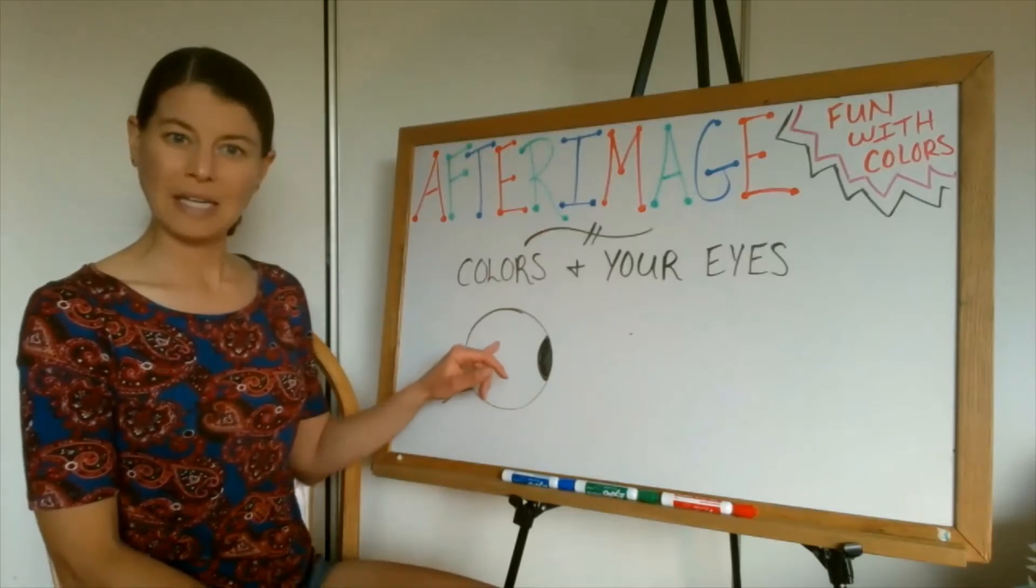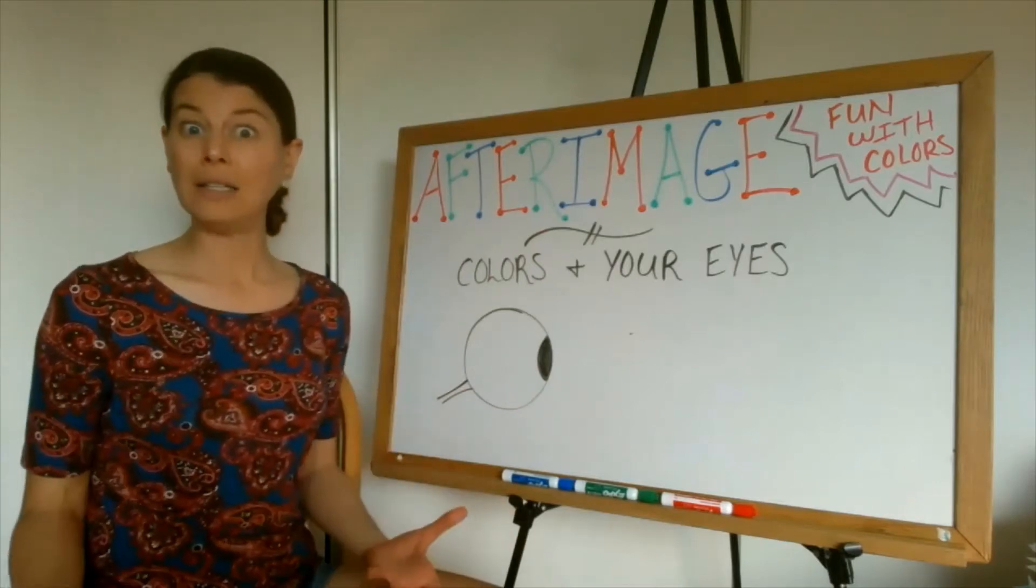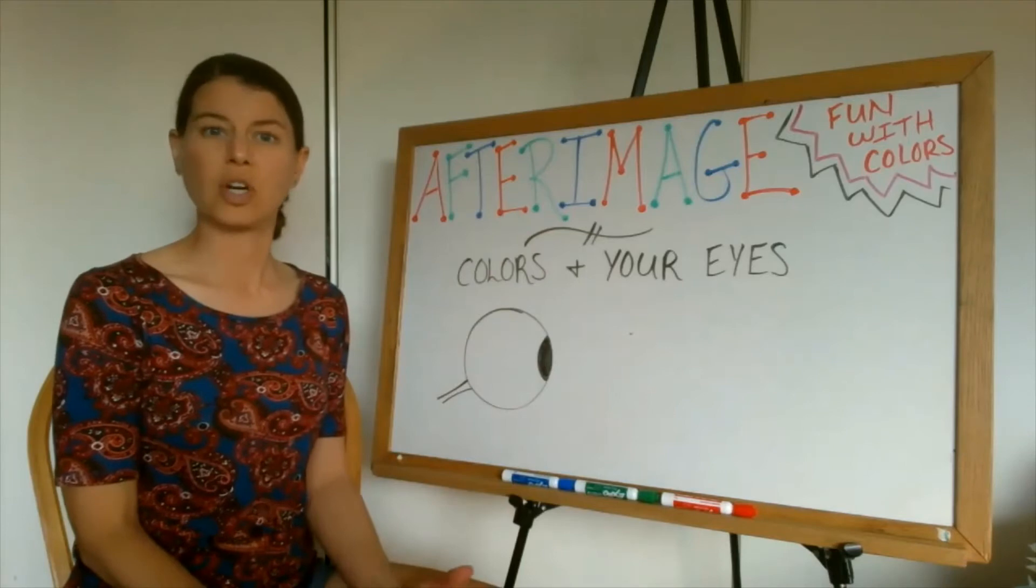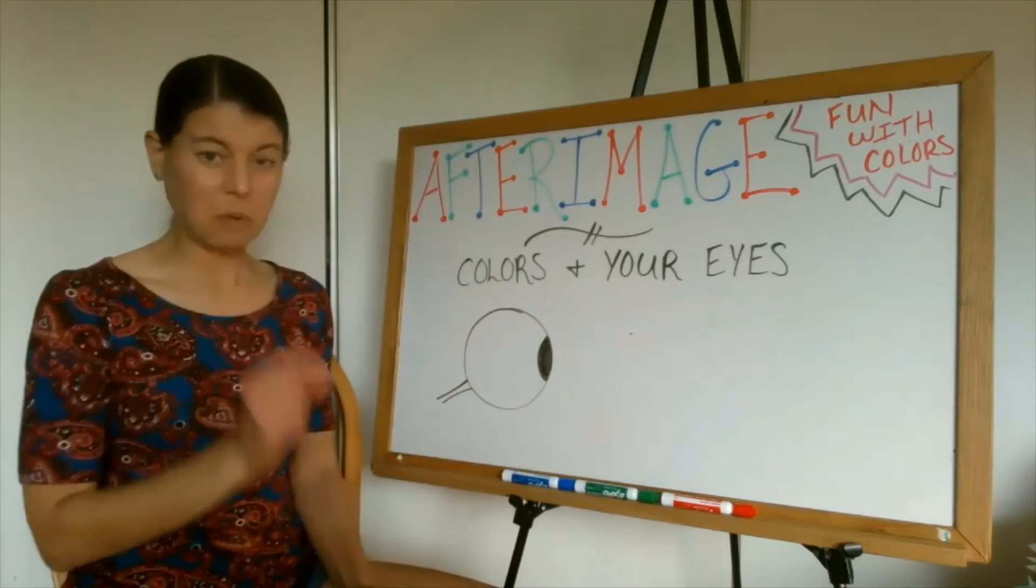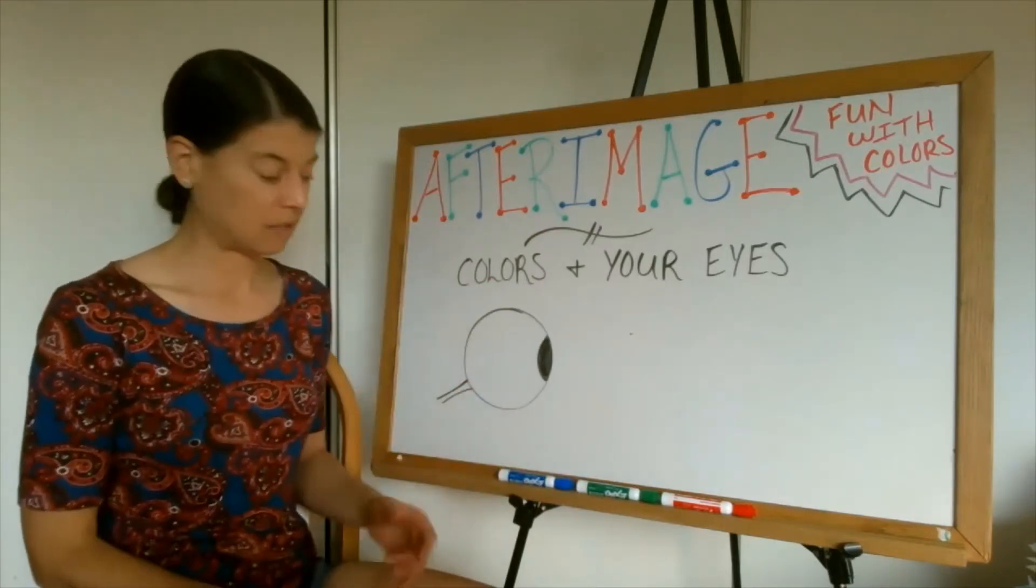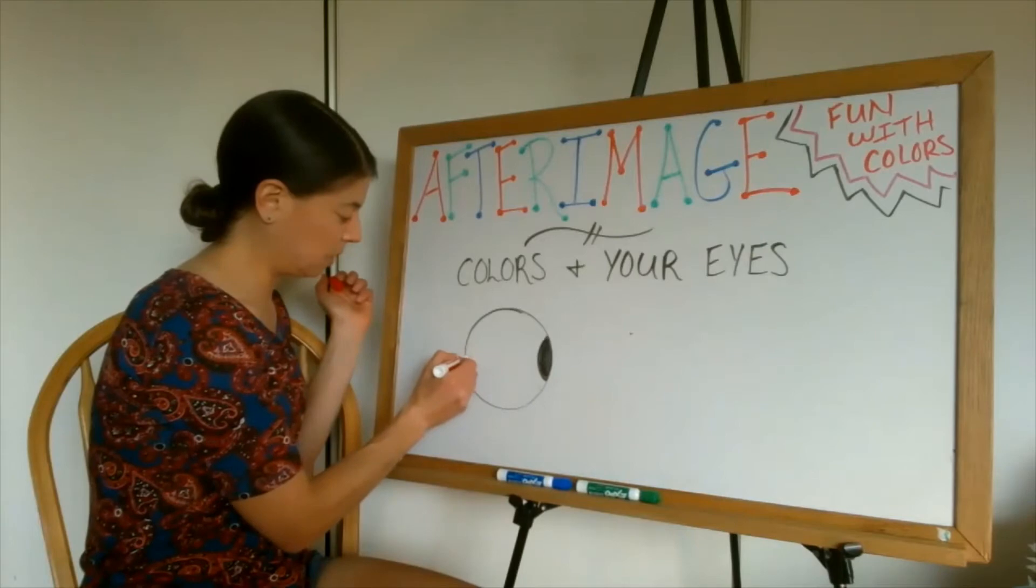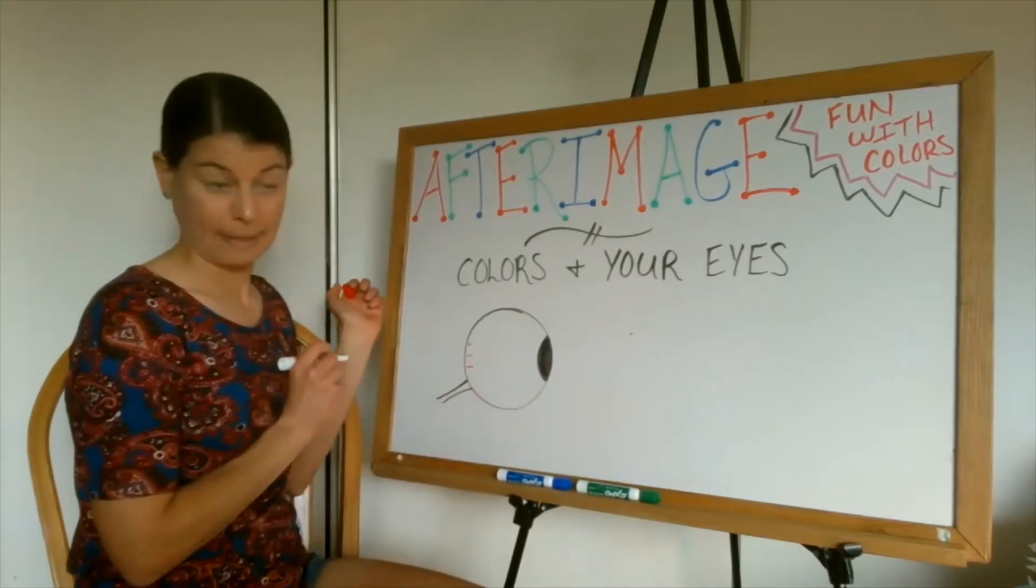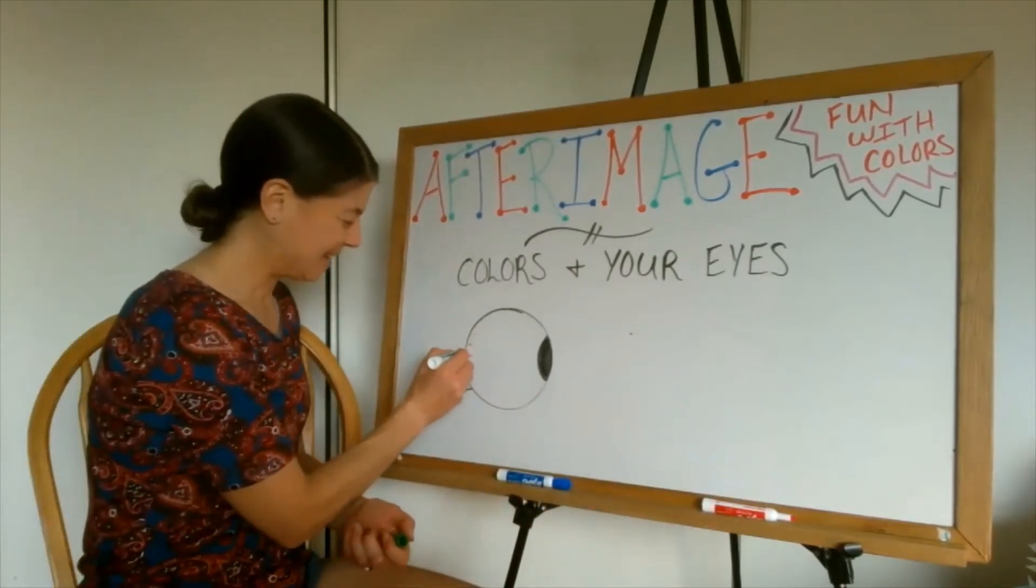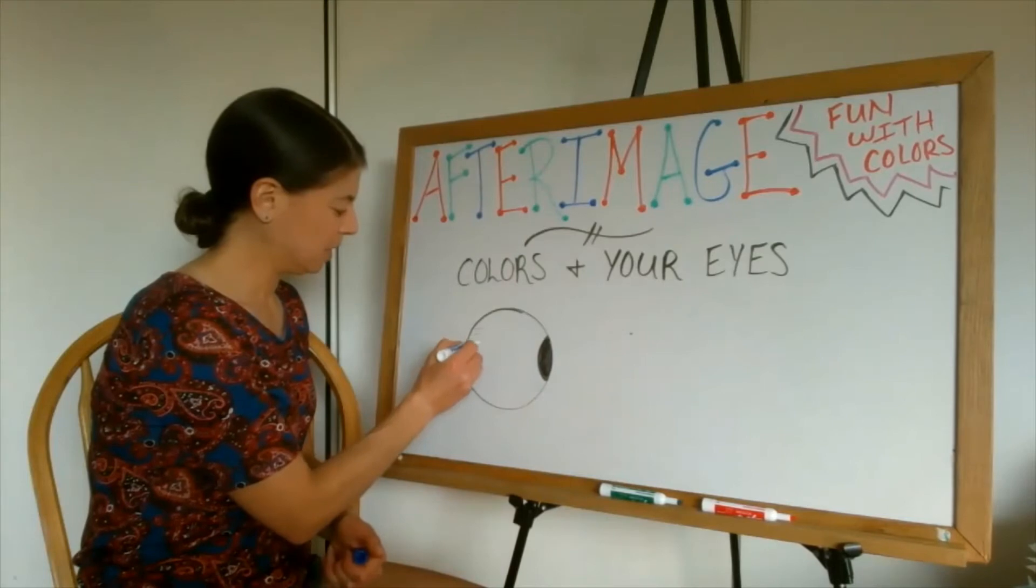The light comes in and then hits the back of your eye, and that's where it starts to go to the brain. Well, there are parts of your eye back here that pick up both shades like black and white as well as color. The parts of your eye back here that pick up color are called cones, and they're called that because they kind of look like that - really small but they look a little coneish. And back there you have three different types of cones: you have blue, you have green, and you have red.